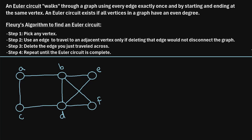In this video, I will explain how to use Fleury's algorithm to find an Euler circuit in a graph. So let's start with a quick definition. An Euler circuit walks through a graph using every edge exactly once, starting and ending at the same vertex. Now an Euler circuit exists in a graph if all vertices in the graph have an even degree.